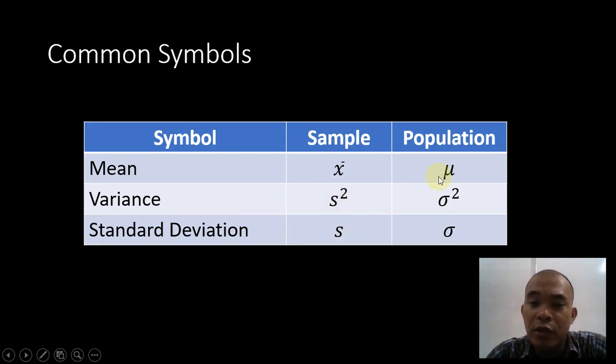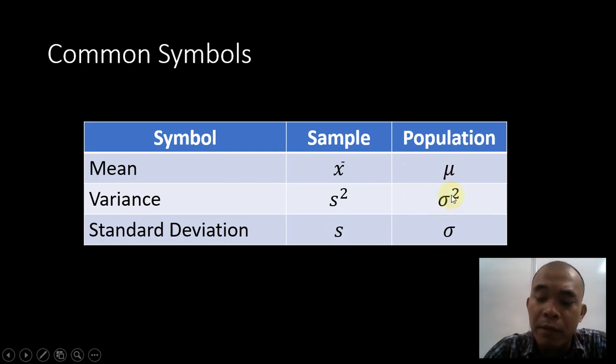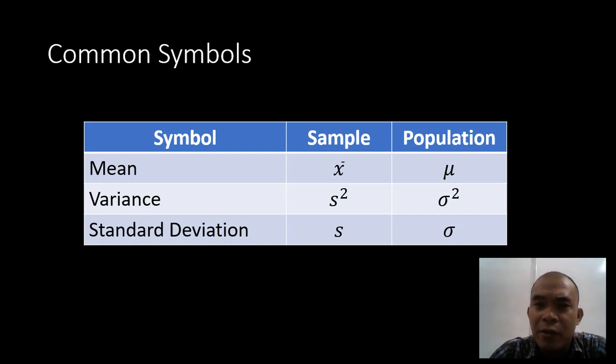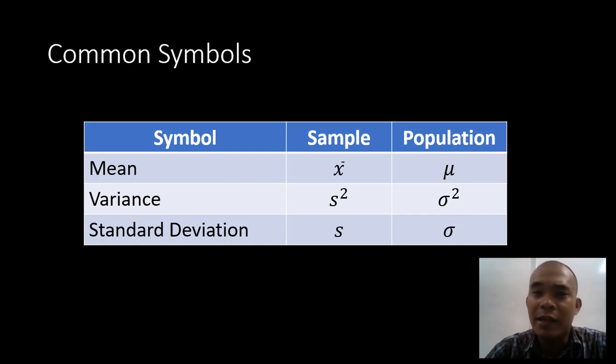For the population, we have mu, and we have sigma-squared for the variance, and sigma for the standard deviation. It is very easy to distinguish, and we discussed this during class.